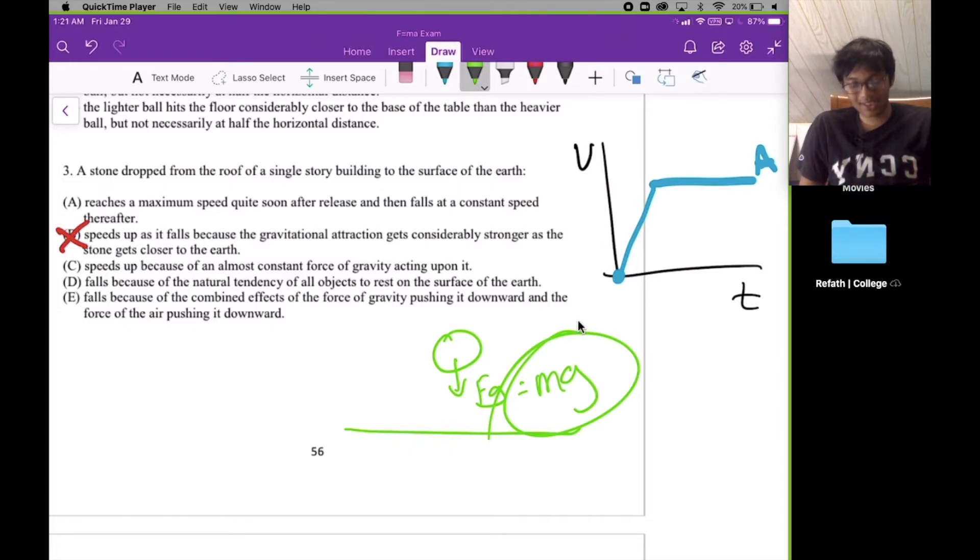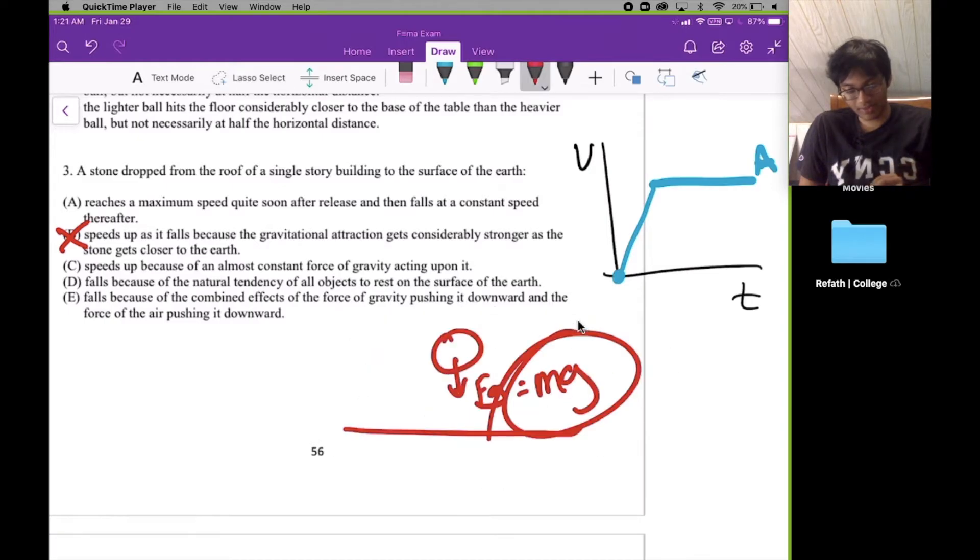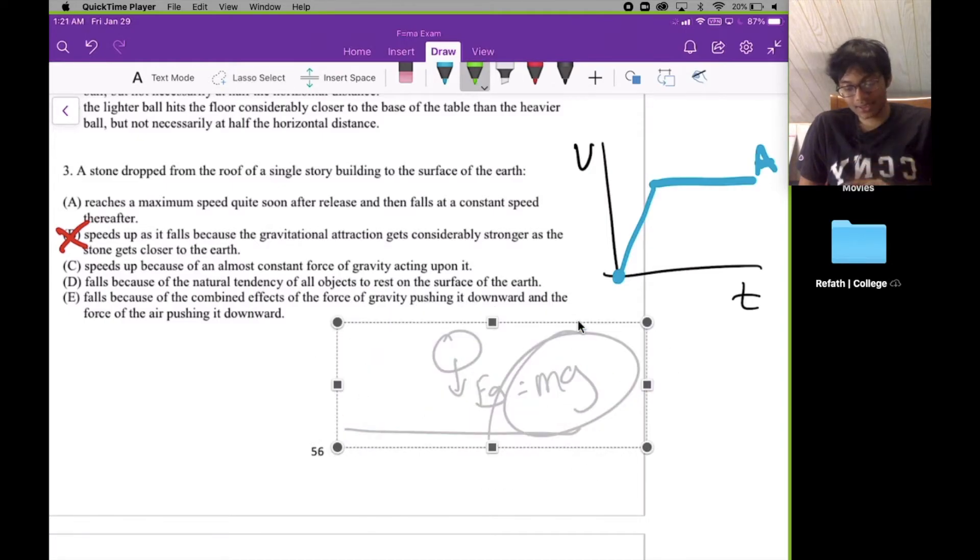How about choice C? Let me highlight this with the lasso select so we can make this red for choice B. Choice C tells us that the ball speeds up because of an almost constant force of gravity acting upon it, and that would be right. Because the acceleration is constant, the velocity would be linear, something like that. That's choice C and that's exactly right. The force of gravity is constant, it doesn't get huge as soon as you reach the surface.